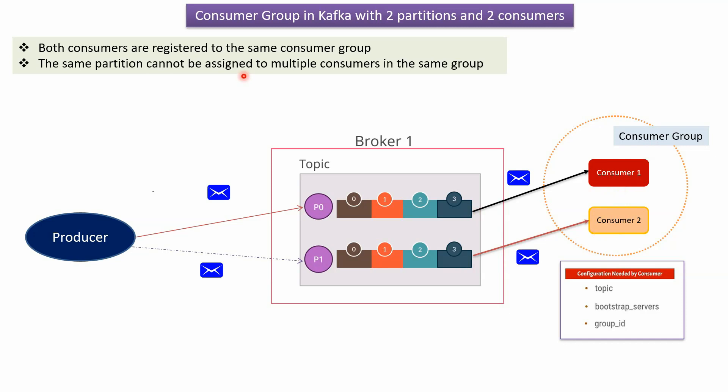As a rule, the same partition cannot be assigned to multiple consumers in the same group. To write a consumer we need some configuration: the first is the topic name — which topic the consumer will consume from; the second is bootstrap servers — the Kafka server IP address and port number; and the third is the group ID — which consumer group the consumer belongs to.